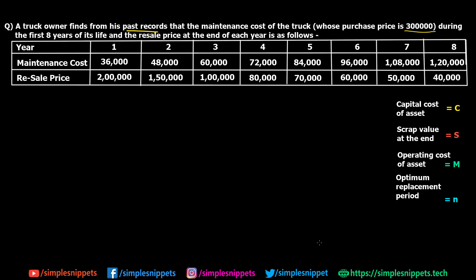Before starting the tabular format, there are certain notations to keep in mind. C is the capital cost of the asset — in this case rupees 3 lakhs. S is the scrap value at the end, which is the same as resale value here. M is the operating cost, synonymous with maintenance cost. And N is the optimum replacement period — the time at which selling gives the best value.